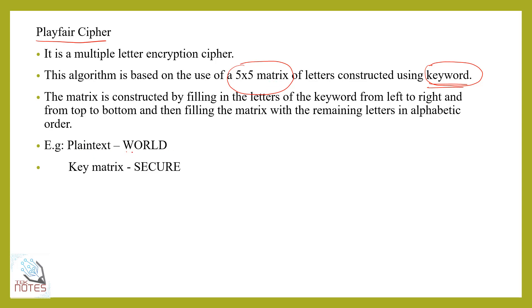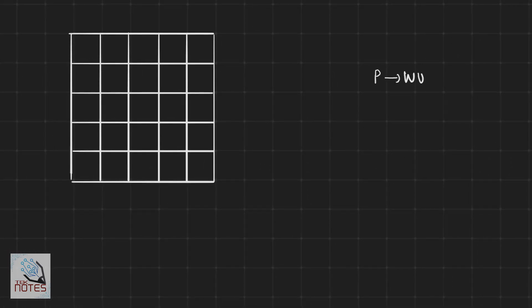Let's check an example. We will convert the plain text word 'world'. The keyword is 'secure'. The keyword depends on the plain text, and we will convert it to cipher text. The question is: how do I construct the 5x5 matrix? The matrix has 5 rows and 5 columns.